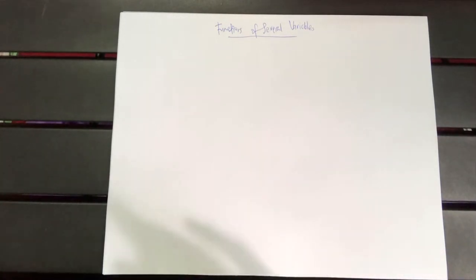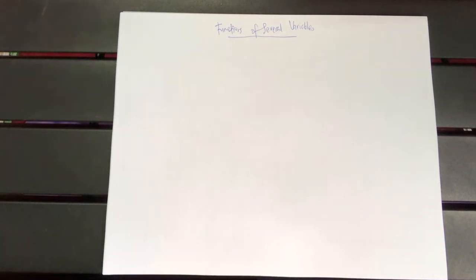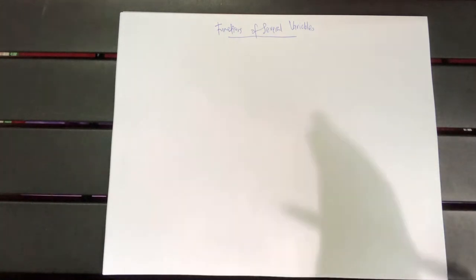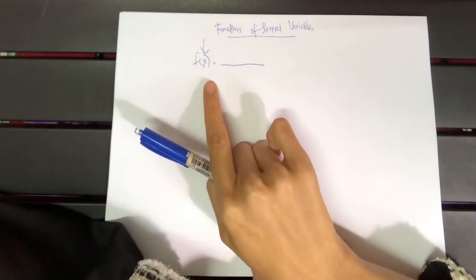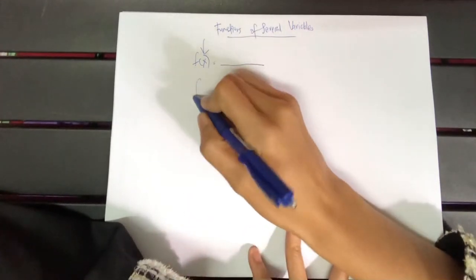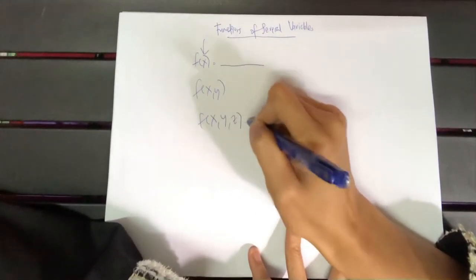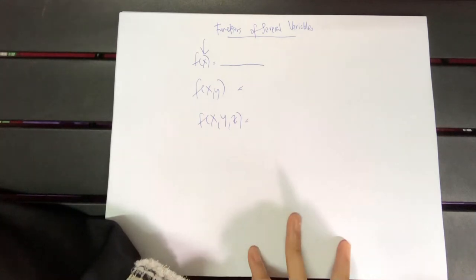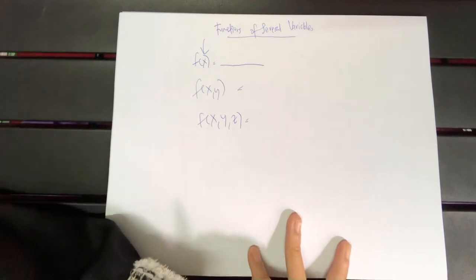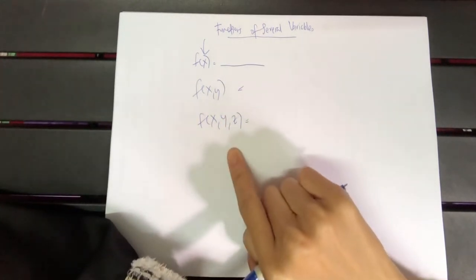Without further ado, we will start our class now. This is Chapter 1, which is about functions of several variables. I think most of you have already learned what a function is — in EM1 and also in DE. The difference here is that before, you only dealt with one variable, but for this topic we will learn functions that consist of two and three variables. That's the only difference — the number of variables involved.